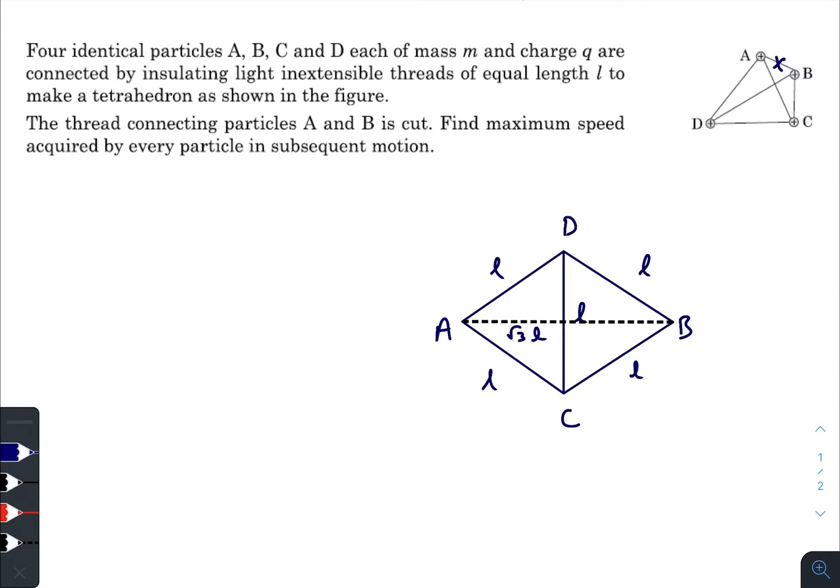Okay, so initial potential energy was 4 times ke q divided by l. Sorry, it will be 4C2 times, because there are four particles and two particles will make one pair, so total number of pairs is 4C2.